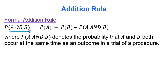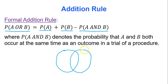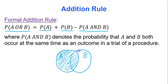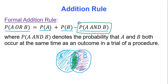The formal addition rule states: to calculate the probability of A or B, take the probability of A, add the probability of B, and subtract the probability of A and B occurring at the same time — that overlap. In a Venn diagram with two overlapping circles, when you add the probability of A and the probability of B, the overlapping area gets counted twice — double counted. That's why you must subtract the probability of A and B occurring together.